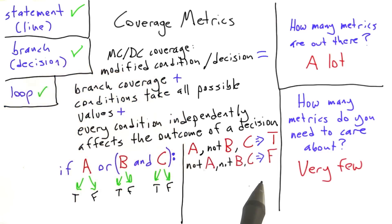So let's write another test case. Okay, so our second test case, with A being input as false, B input as false, and C as true, leads the overall decision to come out as false. So we've shown now that A independently affects the outcome.